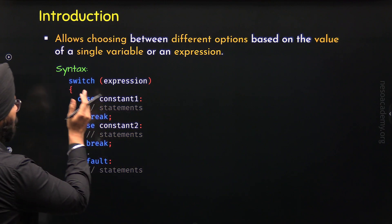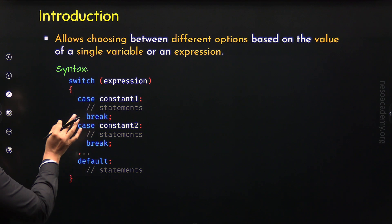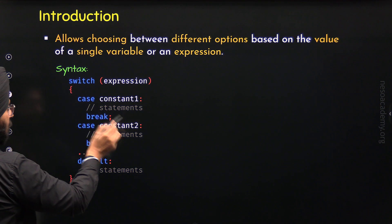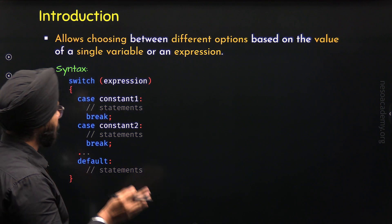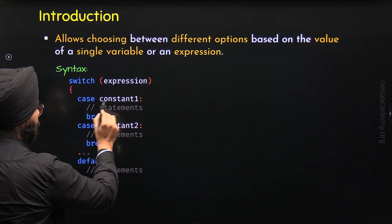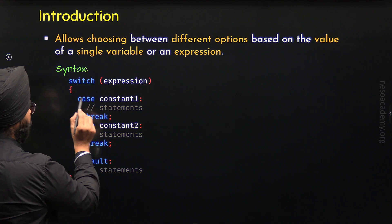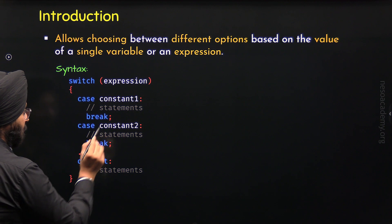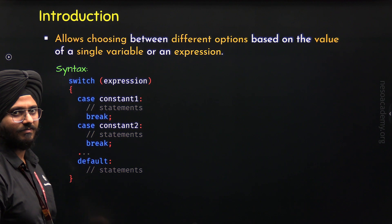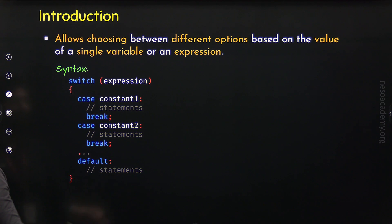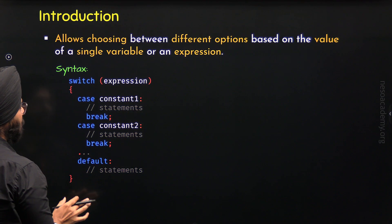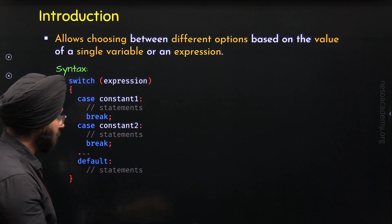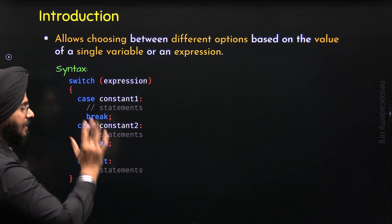Here, we will have the equality comparison. The value of the single variable or expression is compared with these constants. If the value matches with constant 1, then the statements of that case will execute. If the value matches with constant 2, then the statements of that specific case will execute. If the value is not matching with any constant specified, then the default case will execute — meaning the statements within the default case will execute.